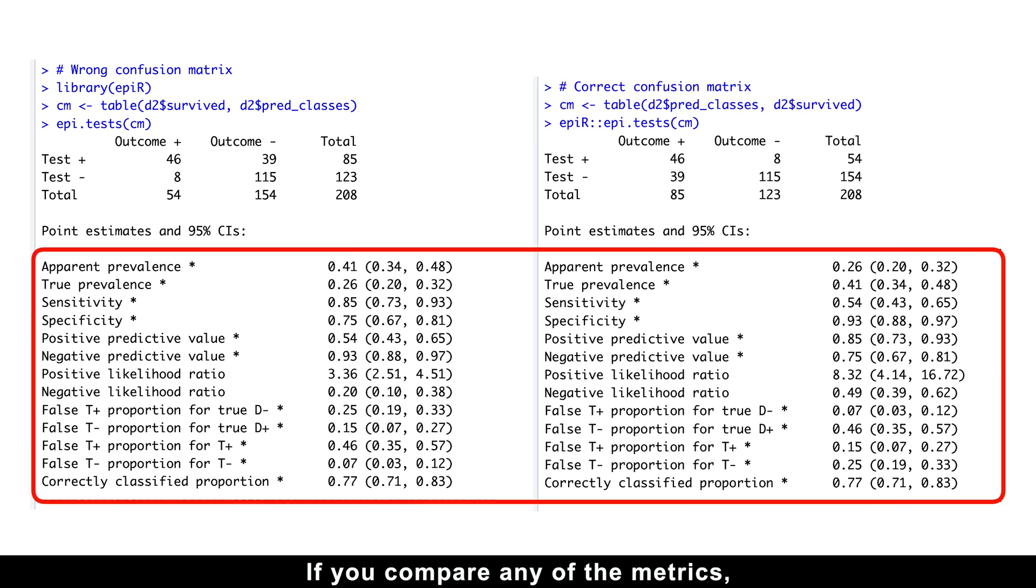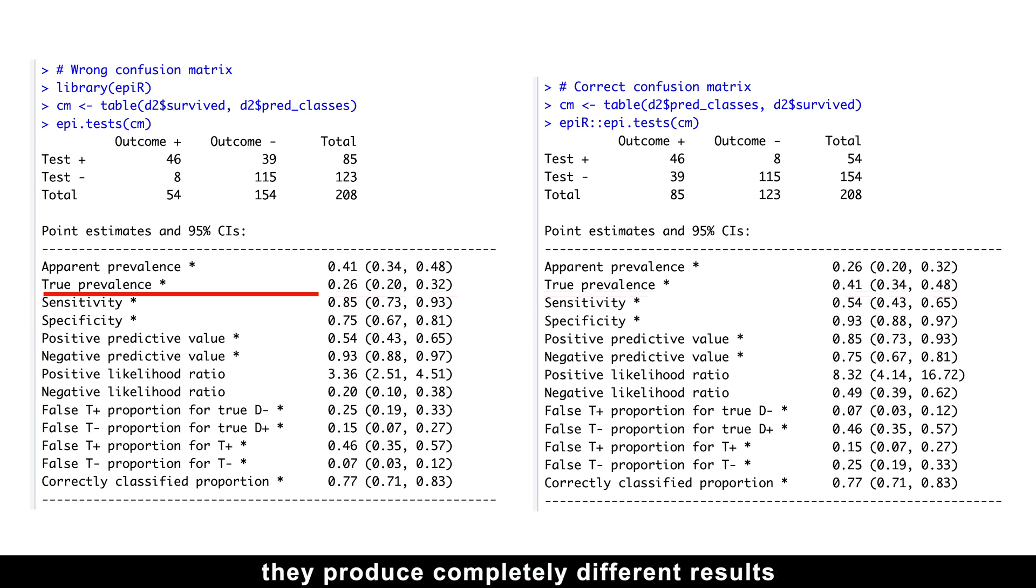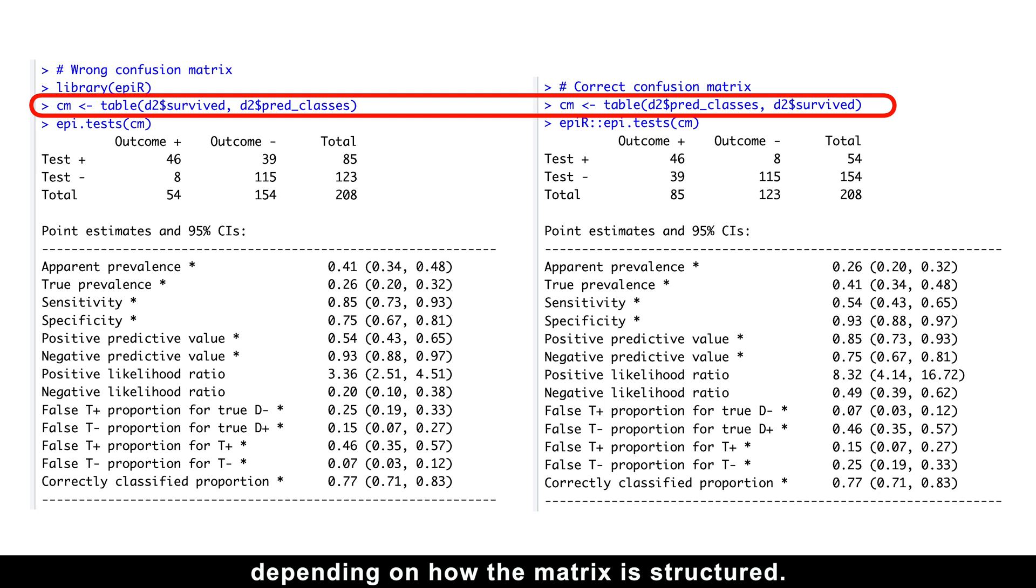If you compare any of the metrics, you'll notice they differ significantly. Take sensitivity and specificity, two of the most commonly used metrics. They produce completely different results, depending on how the matrix is structured.